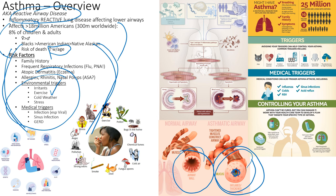Stress can push someone into an asthma attack. Medical reasons include frequent respiratory infections, but also viral pneumonia, viral influenza, or bacterial infections can cause asthma to flare up. When asthma flares up — just like CHF or myasthenia gravis — it's called a crisis or an acute exacerbation (AE). An asthma AE is a medical emergency.